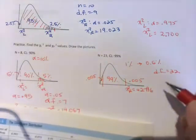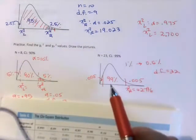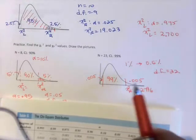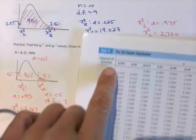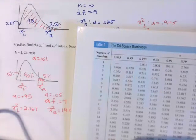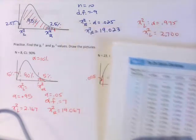And for chi-square left, I need to do the .995, so that's going to be my furthest to the left value, so take that all the way down to 22, so 8.643.